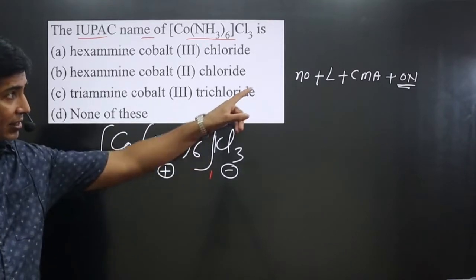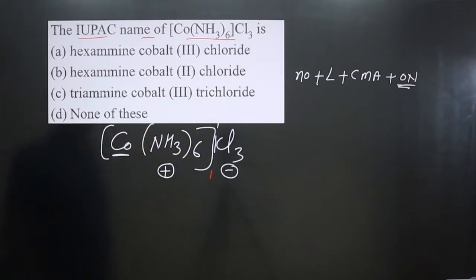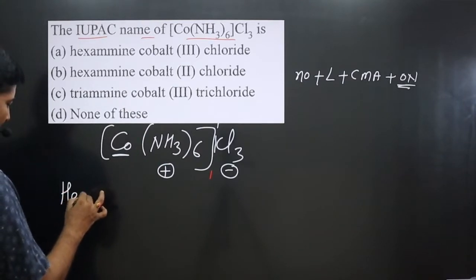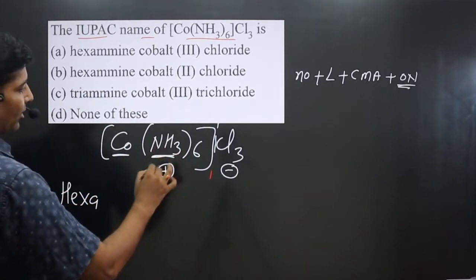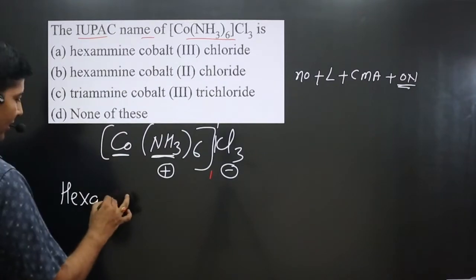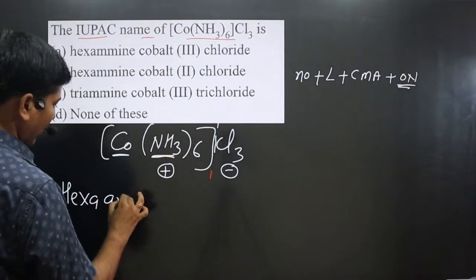Only one type of ligand is given there. Number of ligands, how many? Six are there. So we can mention this is hexa. And this is ammonia, so we name it as ammine. So we have ligands: ammine.